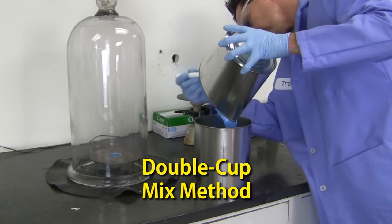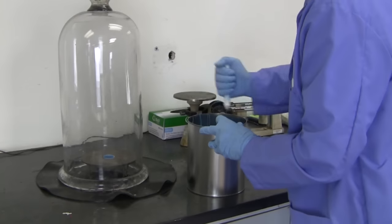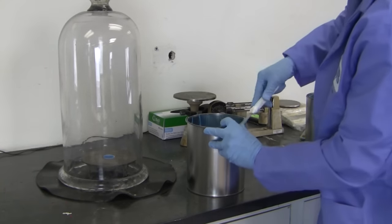Using the double cup mix method mentioned in our other mold making videos, we're less likely to end up with streaks of unmixed material, potentially ruining our mold and wasting material.